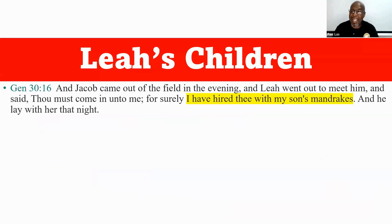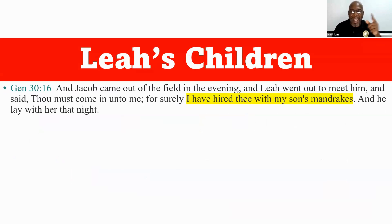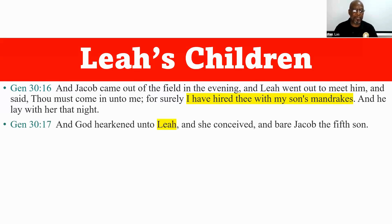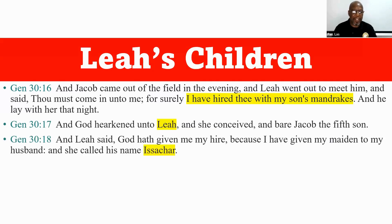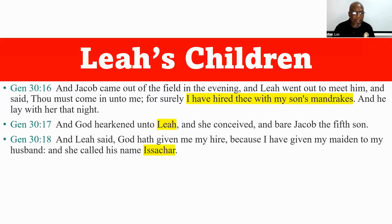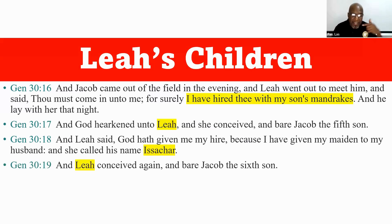And Jacob came out of the field in the evening, and Leah went out to meet him — remember, he was supposed to be heading over to Rachel's house. So Leah went out to meet him and said, 'You must come in unto me, for surely I have hired thee with my son's mandrakes.' And he lay with her that night — Jacob had no choice. And God harkened unto Leah, and she conceived and bore Jacob the fifth son. The mandrake was working.